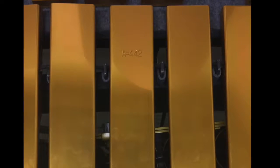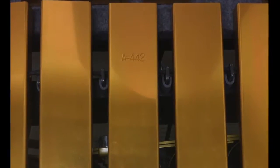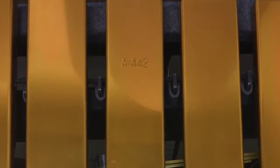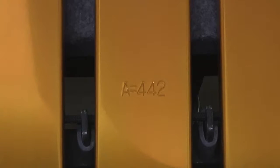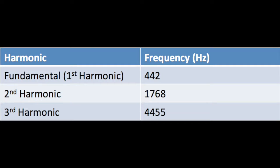Vibraphone bars conventionally have their first three harmonics tuned. This vibraphone has been tuned such that the middle A has a frequency of 442 hertz. We would expect the second harmonic to have a frequency of 1768 hertz, two octaves above the fundamental, and the third harmonic to have a frequency of 4455 hertz, three octaves and a major third above the fundamental.